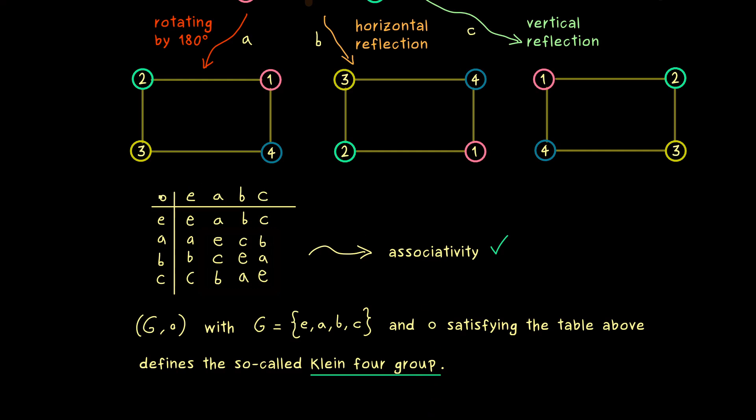Indeed, this is what we see here on the diagonal. Now one common notation for this abelian group is just K4.